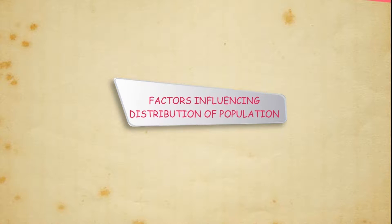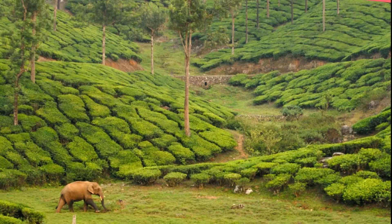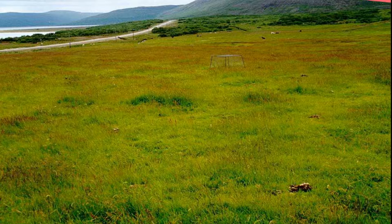Factors Influencing Distribution of Population. In this world, there are vast variations in climate, surface features, soil, vegetation, etc. This diversity is reflected in a great difference in the distribution of population. No single factor can ever control population distribution; all the factors work in combination to control distribution of population.